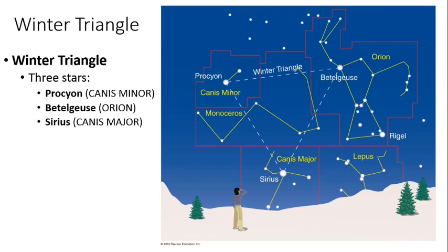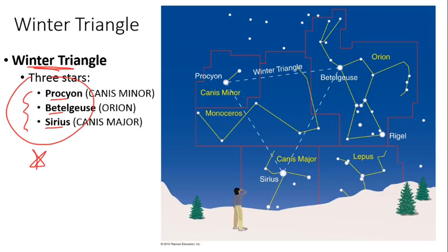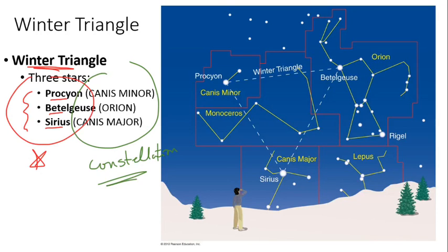The next slide: right now we're in just the first part of November, and we still see the Summer Triangle, which is on the next slide. But the Winter Triangle is made up of three stars from different constellations. In bold is the star name, and on the right in capitals is the constellation. Here we have the constellation Canis Minor, the little dog, and its bright star, Procyon.